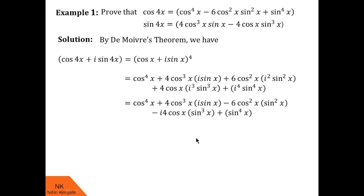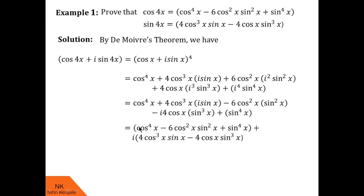Now finally in step 3, we separate the real and imaginary parts out of this expansion. The real terms are cos⁴x − 6cos²x·sin²x + sin⁴x — I call them real because they do not have i in them. The remaining terms which contain i are the imaginary parts. So after separating real and imaginary terms, we get this.